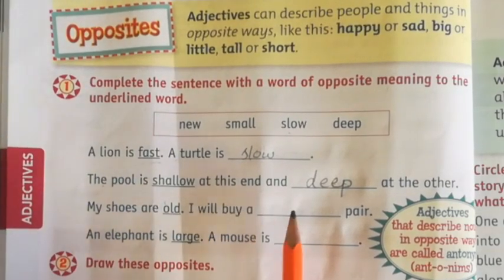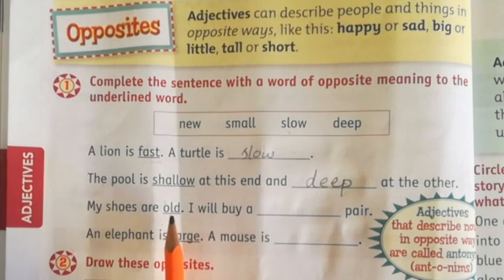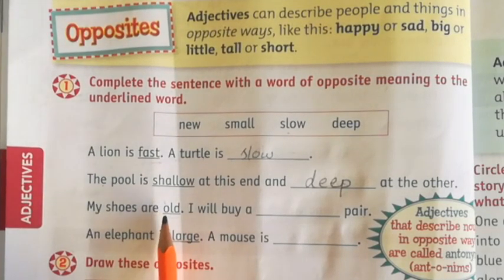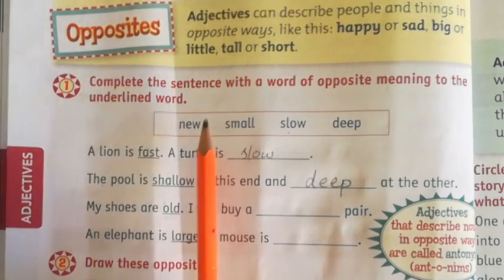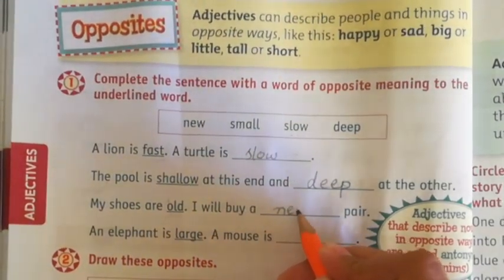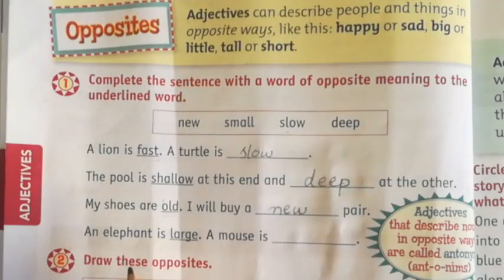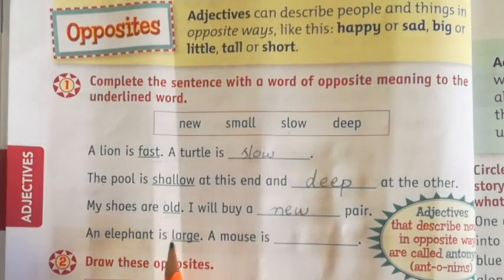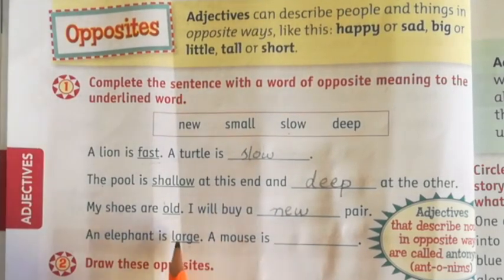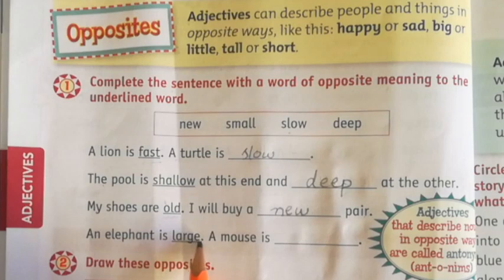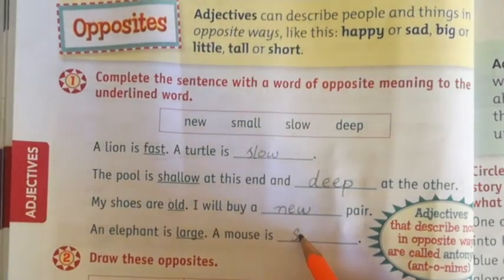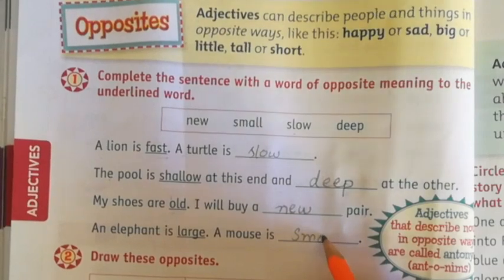My shoes are old, I will buy a blank pair. The underlined word is old and the opposite of old is new — N, E, W. An elephant is large, a mouse is blank. The underlined word is large and the opposite of large is small, so we will write small.